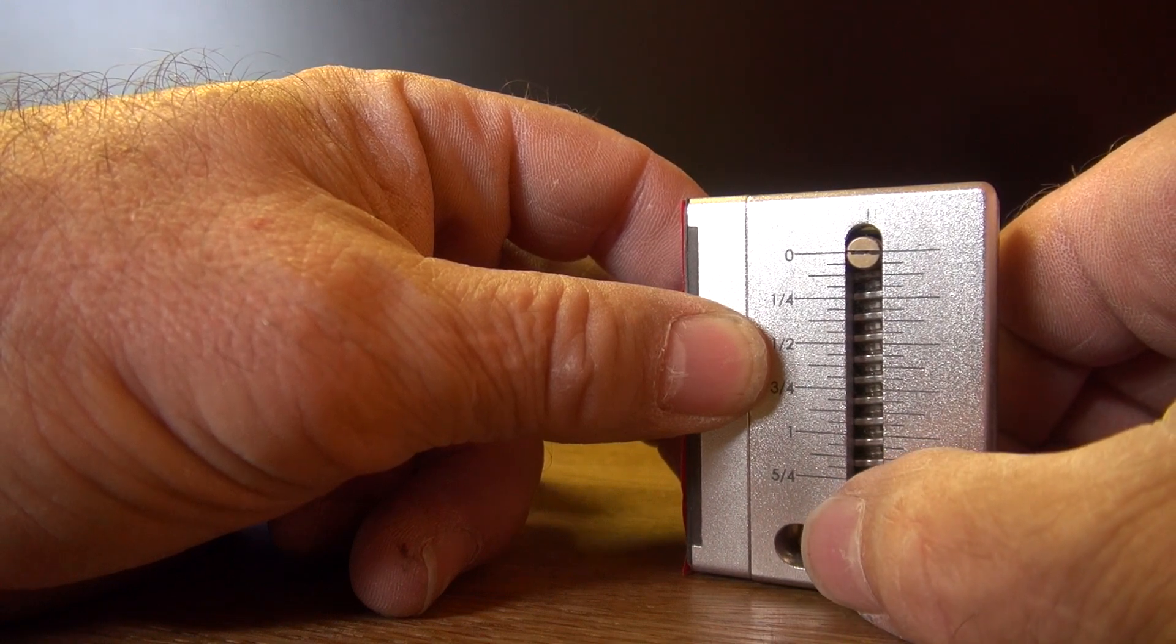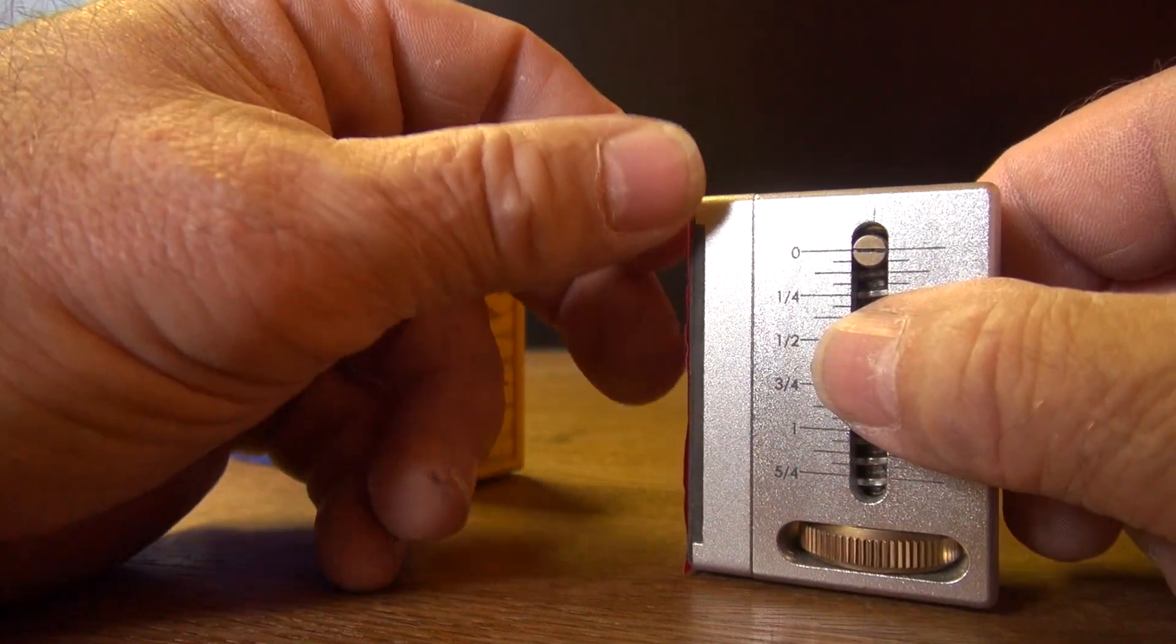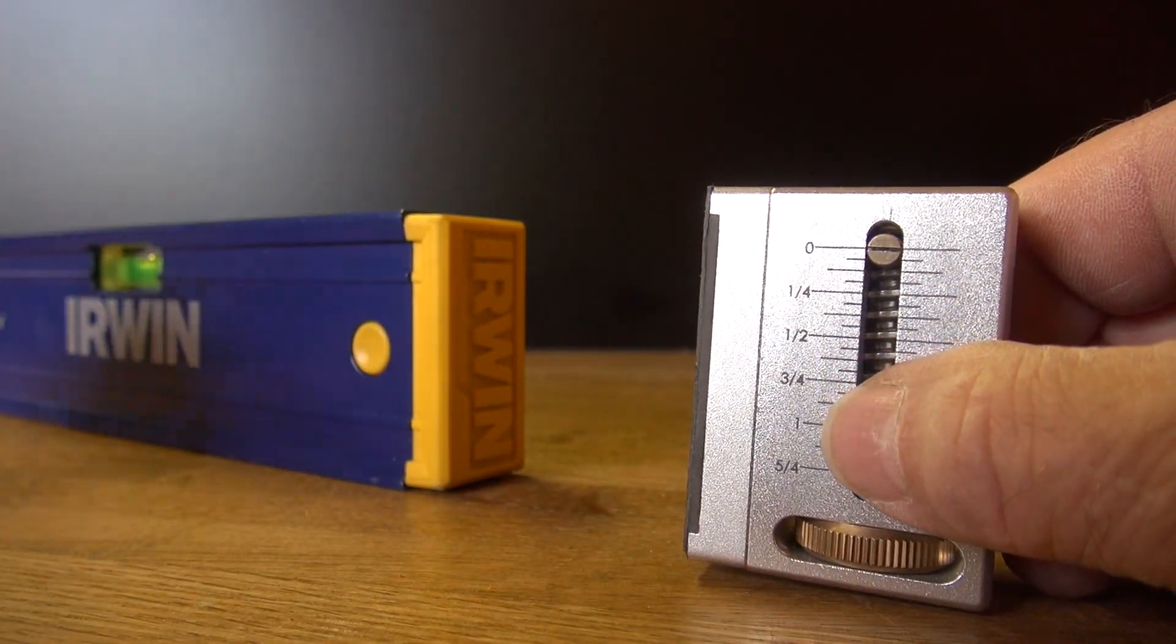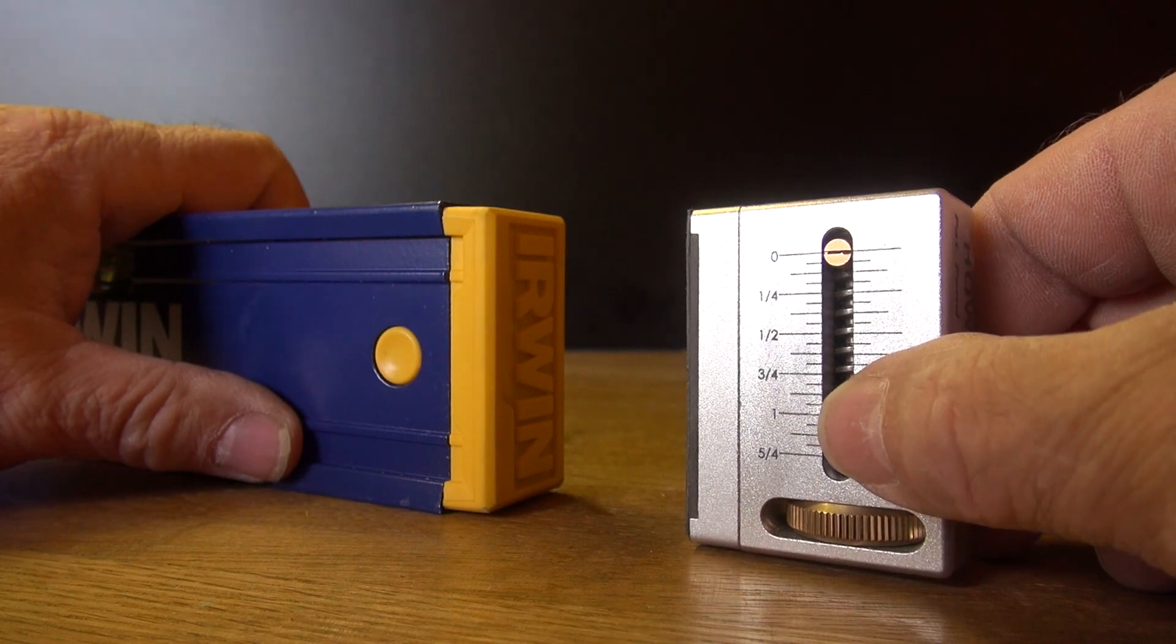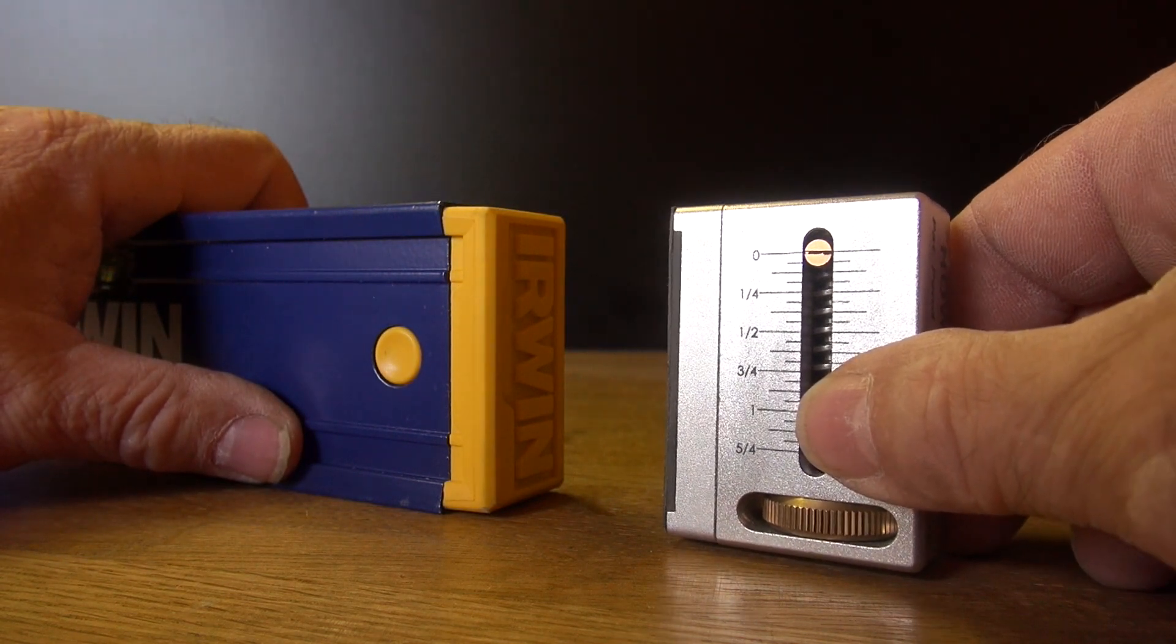Next, you want to peel off the liner from the tape. Now with your level on a flat surface like this table, doesn't have to be level, and the bottom of the screw touching the same surface, just squash the two together real carefully like this.